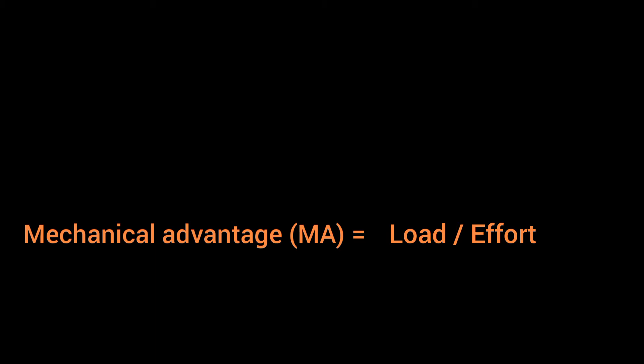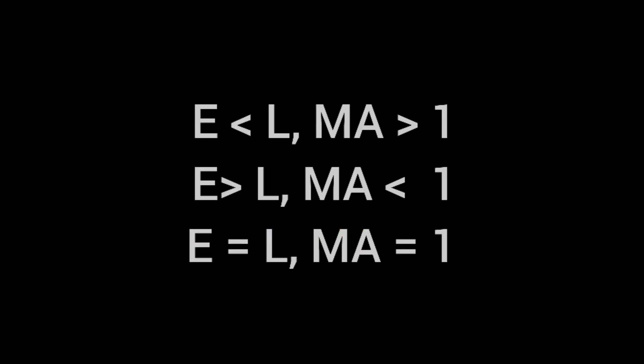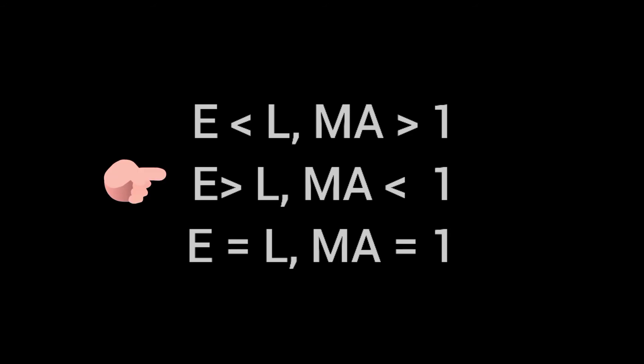Greater the mechanical advantage of a machine, smaller is the effort required to lift the given load. If E is less than L, then MA is greater than 1. Here E represents effort, L represents load, and MA represents mechanical advantage. That is, if effort is less than load, then mechanical advantage is greater than 1. If effort is greater than load, then mechanical advantage is less than 1. And the third condition is, if effort is equal to load, then mechanical advantage is equal to 1.